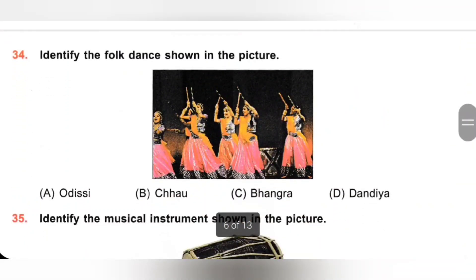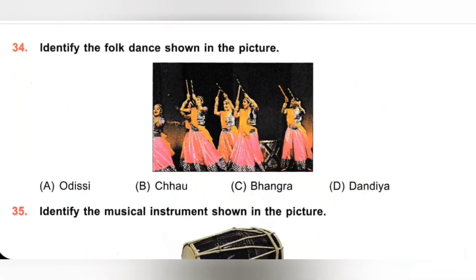34th. Identify the folk dance shown in the picture. A. Odissi, B. Chau, C. Bhangra, D. Dandiya. The folk dance shown in the picture is Dandiya. Option D is the correct answer.